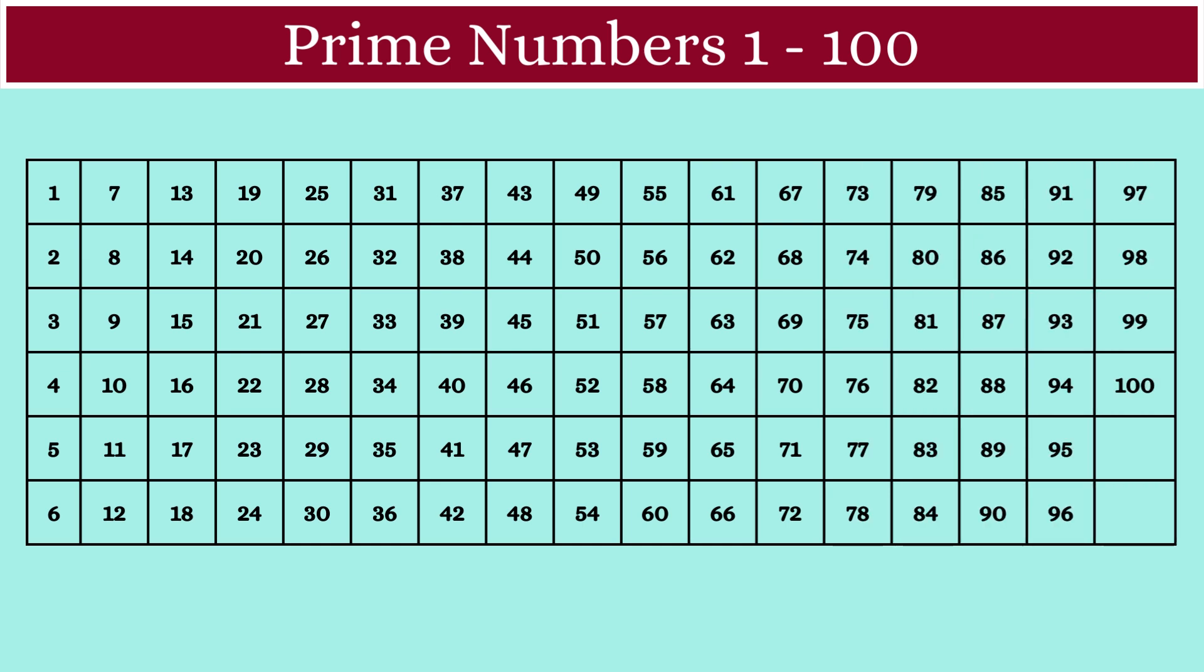Now, we know that prime numbers are numbers with only two factors. The number 1 is a special case. It's neither prime nor composite. So, we'll start from 2.